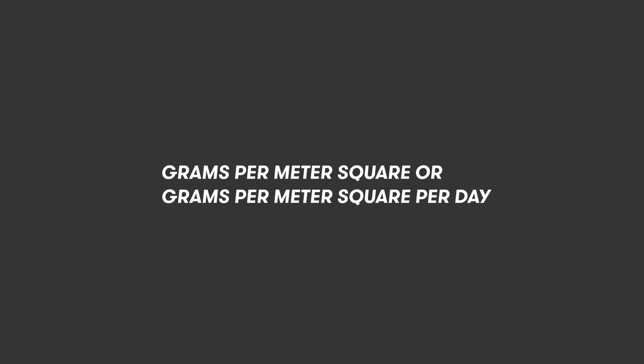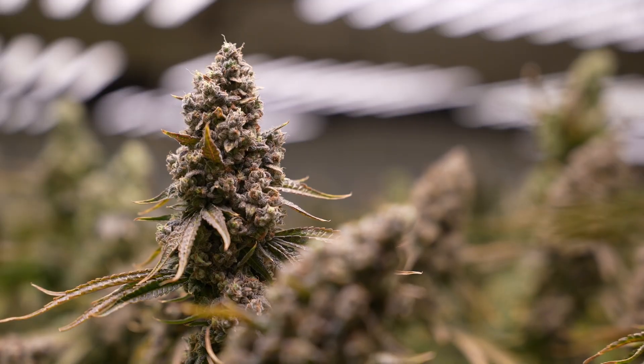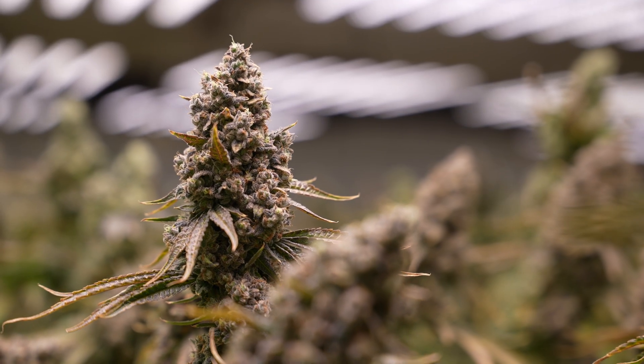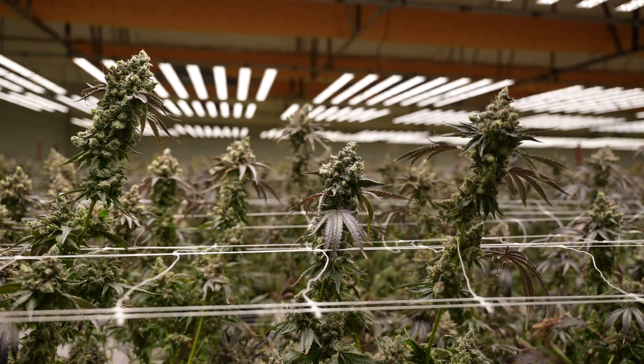We always recommend focusing on grams per meter squared or grams per meter squared per day. These metrics give a more accurate picture of productivity while taking into consideration how much space you're using for growing your plant.